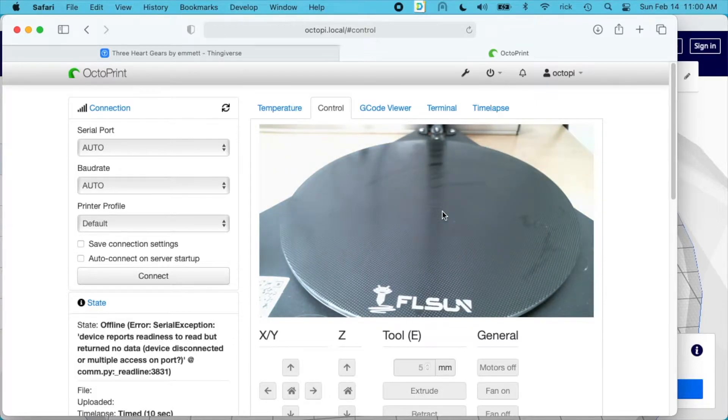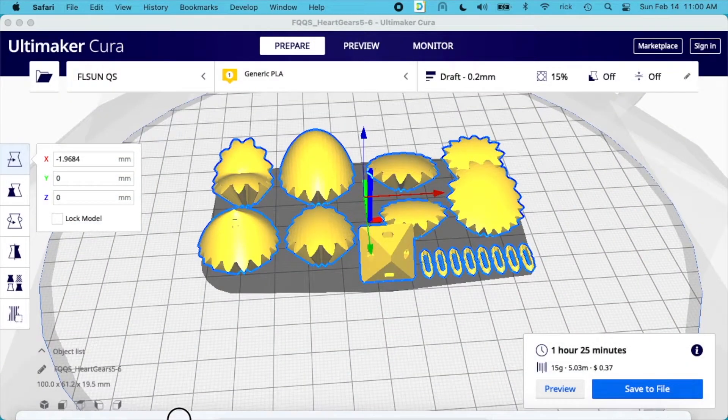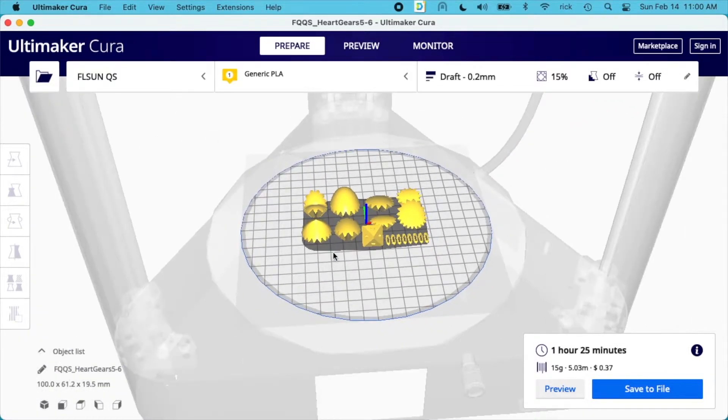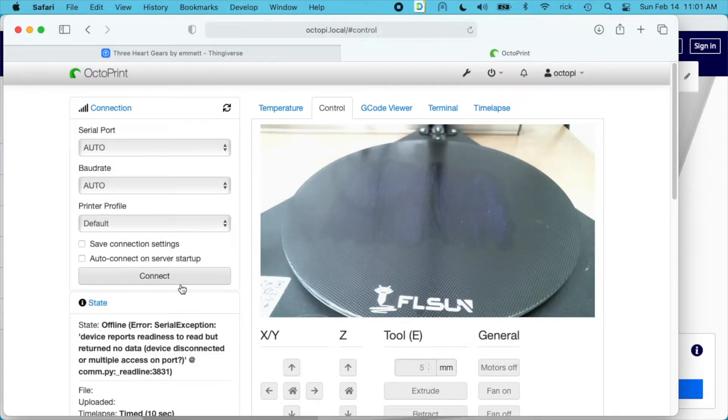Since this model has some small areas that touch the build plate, I'm going to increase the adhesion by using a glue stick. Once this alcohol here dries I'll smear that on. To know where you need to put your glue stick, just look on your model on Cura and then kind of guess where that lies on the plate and then have a safe margin around it.